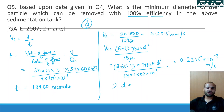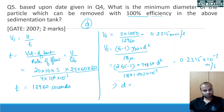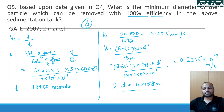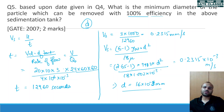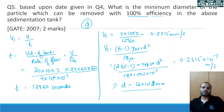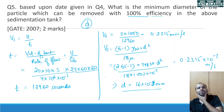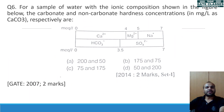Please calculate it once by yourself as well. The value should come around 16×10⁻³ mm. Moving on, we have a question based upon hardness and alkalinity.